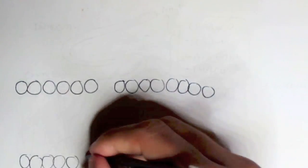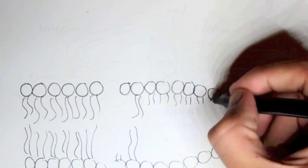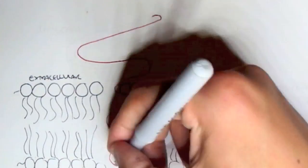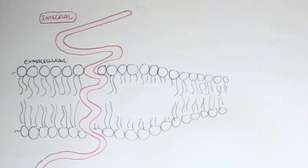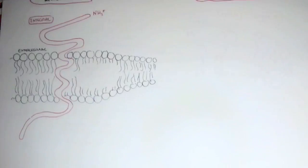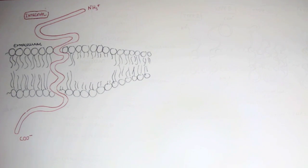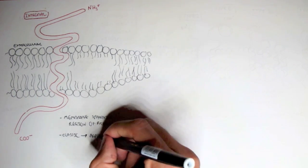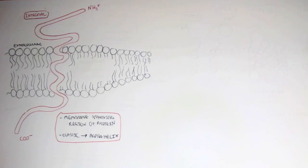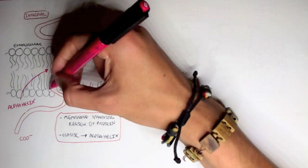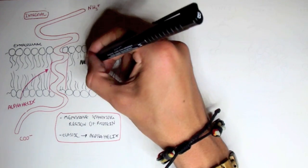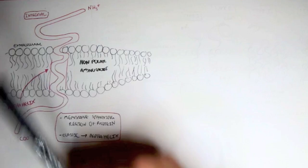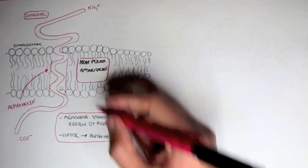Let's look more specifically at integral proteins. Here I'm going to draw the membrane bilayer again. We have the extracellular fluid, and here is the integral protein consisting of the head group, the amino group, and the carboxyl group. The classic structure of the integral protein that spans the membrane is an alpha helix structure. The area within the membrane usually consists of non-polar amino acids because they are hydrophobic.